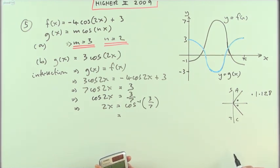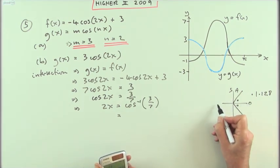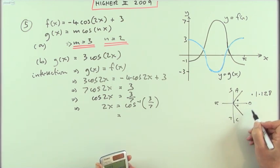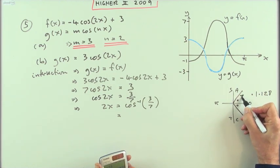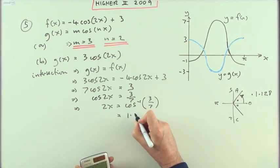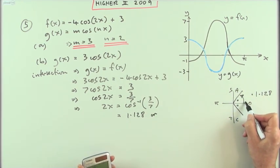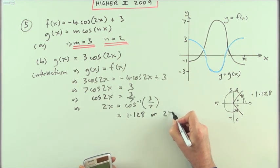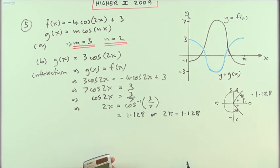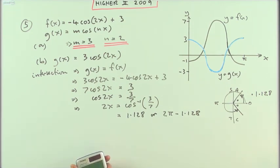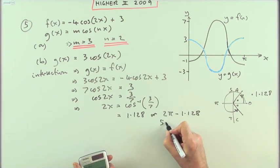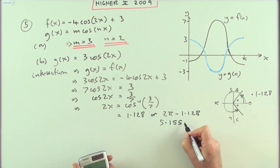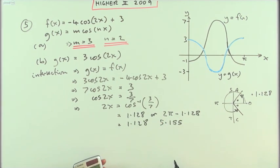That angle is 1.128 radians. Remembering that in radians it won't be 0 to 180, it'll be 0 to pi, and 0 will also be 2pi. So my two angles are either 1.128 radians, or going all the way round to 2pi minus 1.128. Since that's not exact I'll just type it in, and I get 5.155. So the two values are 1.128 or 5.155.